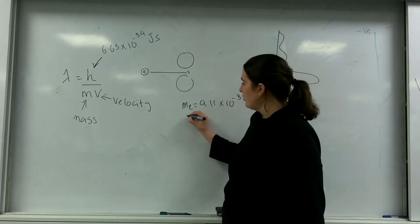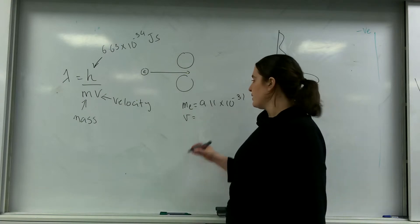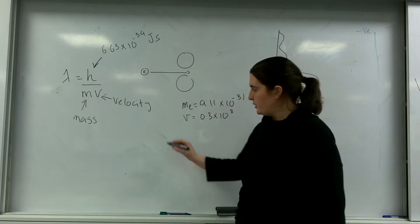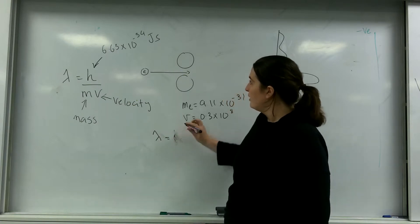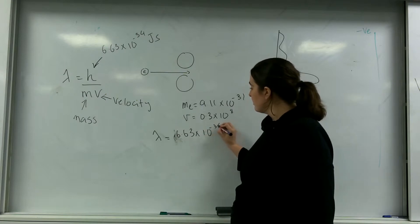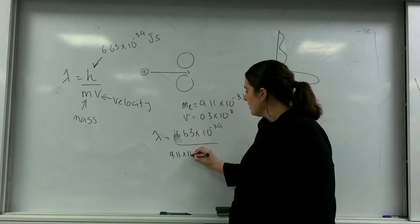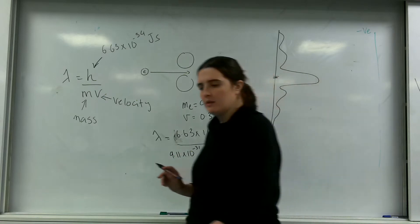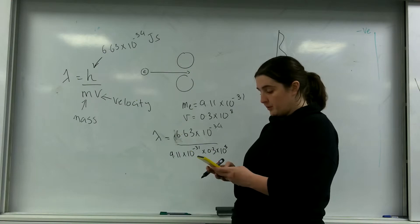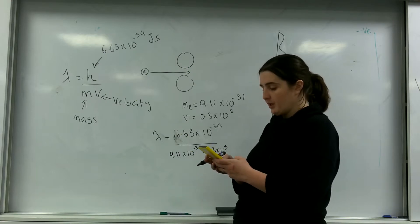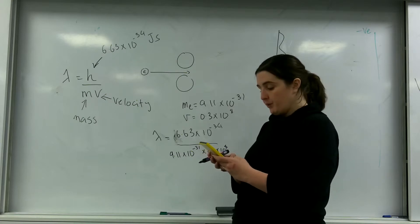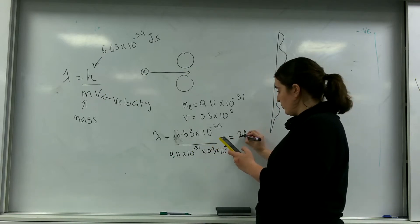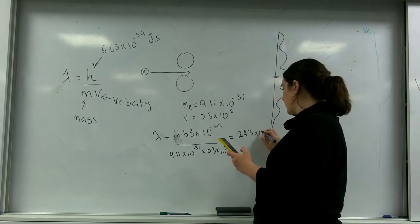So if I had an electron moving at, let's say, a tenth of the speed of light, let's find out what its wavelength would be. So I have 6.63 times 10 to the minus 34 over 9.11 times 10 to the minus 31 times 0.3 times 10 to the 8. I get an answer of 2.43 times 10 to the minus 11.